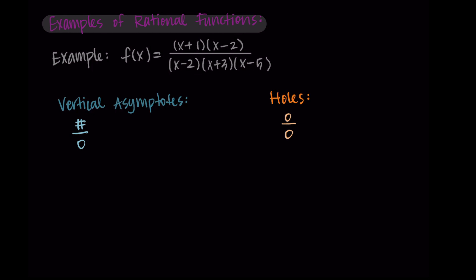Looking at the function, 0 over 0 is going to occur at the term x minus 2 that's in both the numerator and the denominator. That x minus 2 term is what makes both the numerator and the denominator equal to 0. The x plus 3 and x minus 5 terms are what make just the denominator equal to 0, so those are for our vertical asymptotes. Starting with the holes, I solve x minus 2 equals 0, and I get x equals 2.